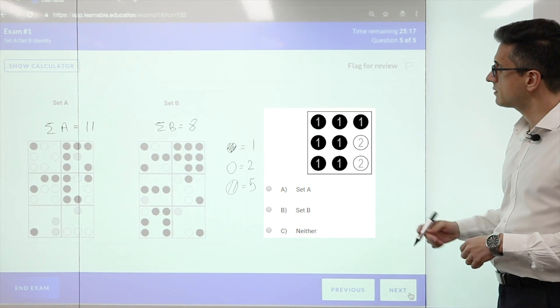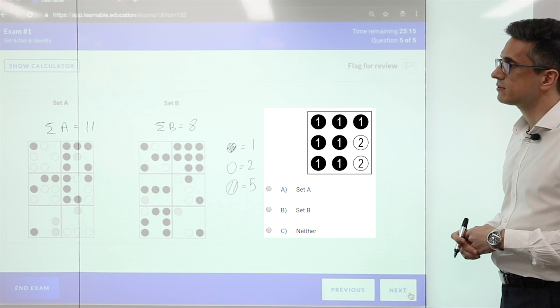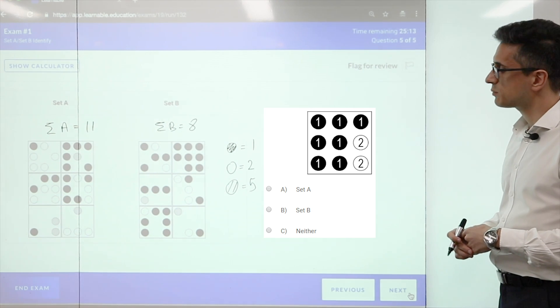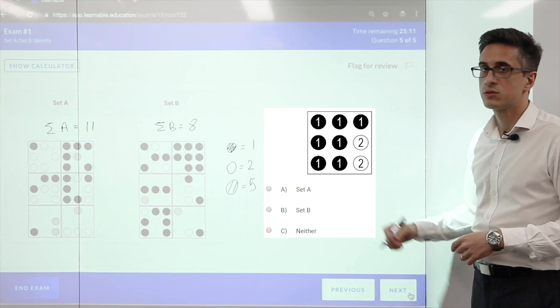And for the last question in this set, we can add up the shapes, they add up to 11, so 11 belongs to set A. 1 and 3. 2.